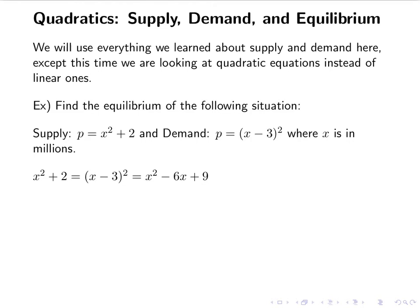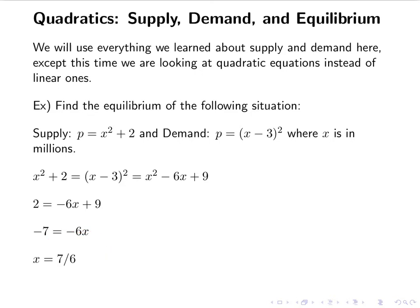The really nice thing is that the x squareds are going to cancel. So I have 2 equals negative 6x plus 9, and I'm back to a linear equation — no need for the quadratic formula. I'm going to subtract 9 from both sides, then divide by negative 6. The negatives cancel. x should always be positive since it's a quantity. So if you're getting a negative, something went wrong. And we're getting 7 sixths, which is 1.1666... million.